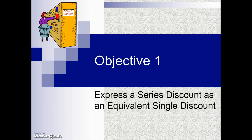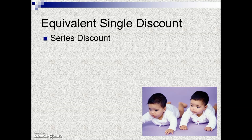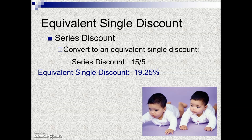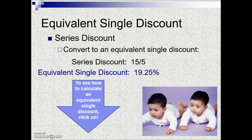Calculating single discount equivalents. Series or chain discounts are often expressed as a single discount rate, and that's what we're going to determine in these first series of slides. When we're given a series discount, we want to convert it into an equivalent one-number representation. For example, if you were given a series discount of 15% and an additional 5%, the equivalent single discount would be expressed as 19.25%.